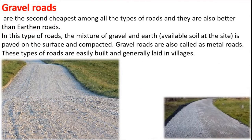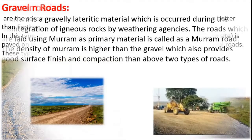Next is gravel roads. Gravel roads are the second cheapest among all types of roads and are better than earthen roads. In this type, a mixture of gravel and earth available at the site is paved on the surface and compacted. Gravel roads are also called metal roads. These types of roads are easily built and are generally laid in villages.